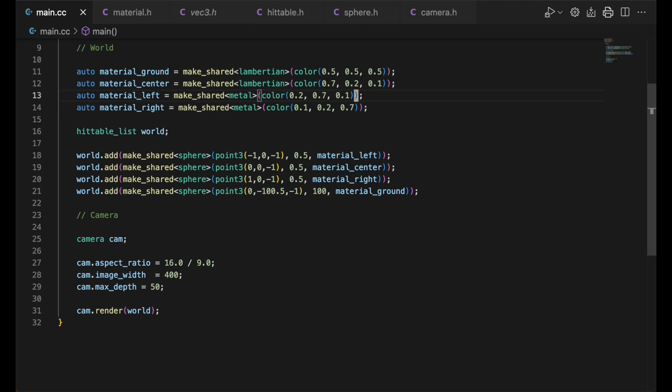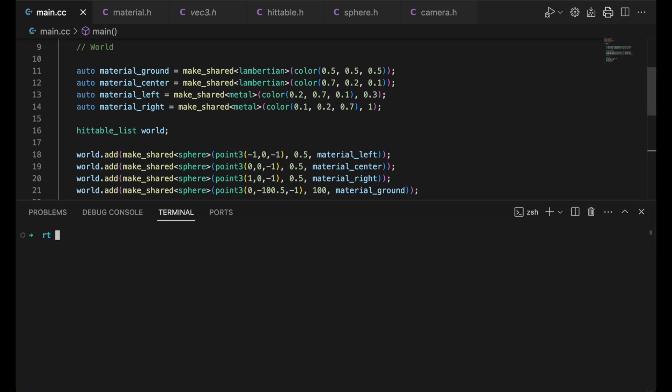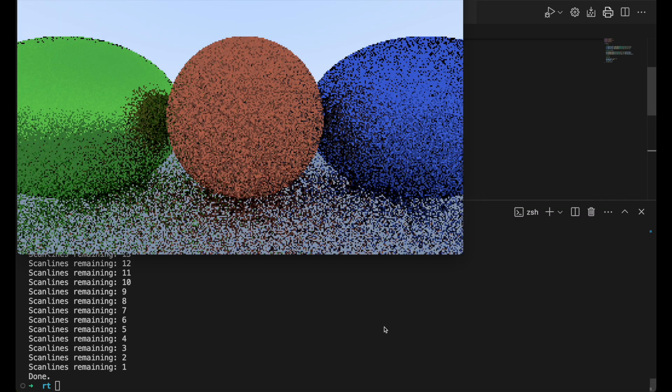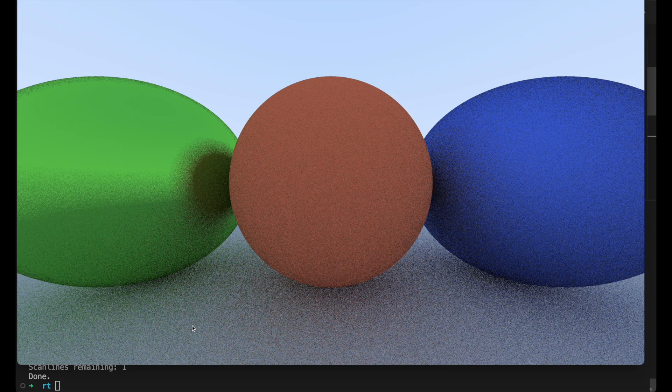We'll generate our image again, giving the green sphere a small fuzz factor and the blue sphere the max fuzz size. We can see the effect at grazing angles. The blue sphere is definitely fuzzy, and we can see many absorbed rays. Generating again with higher resolution, we get this image. Looks pretty good.